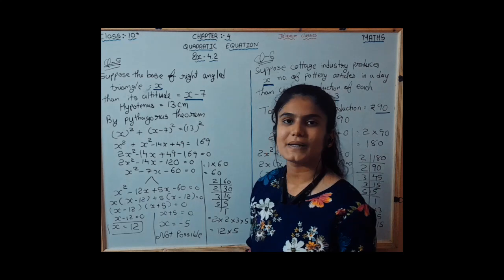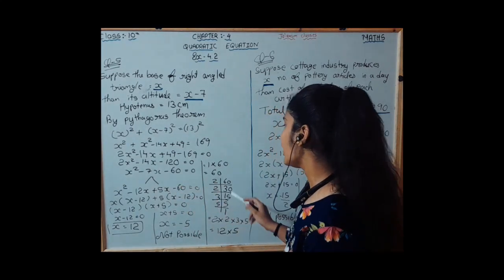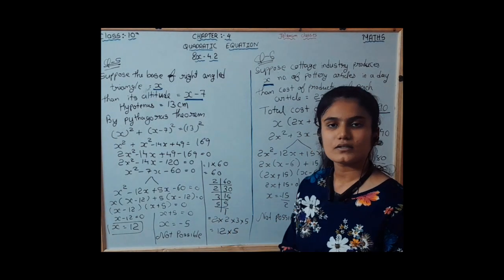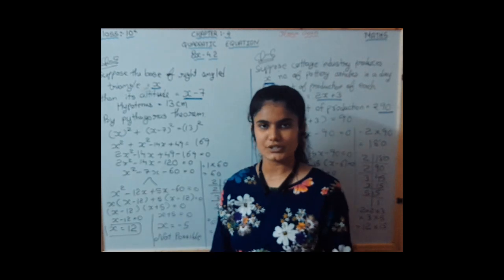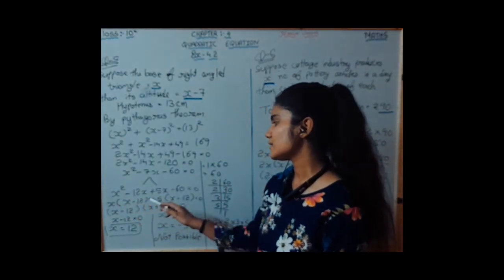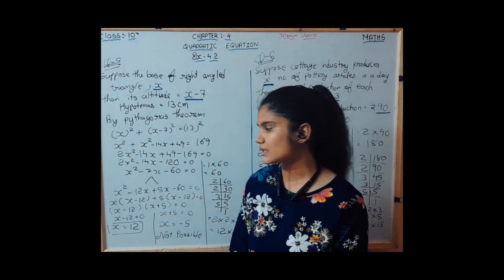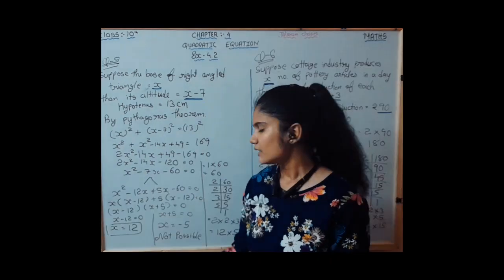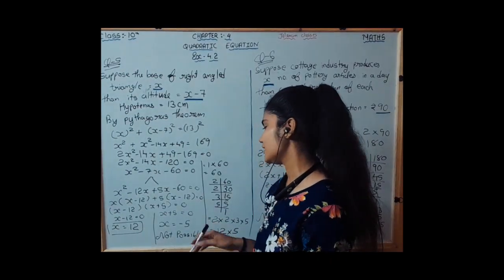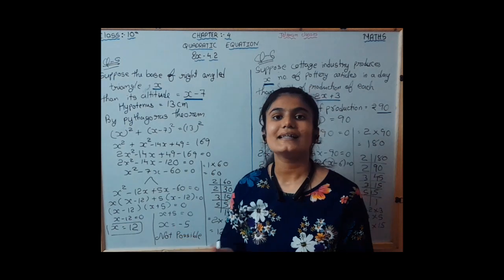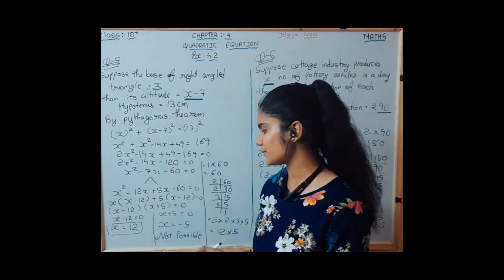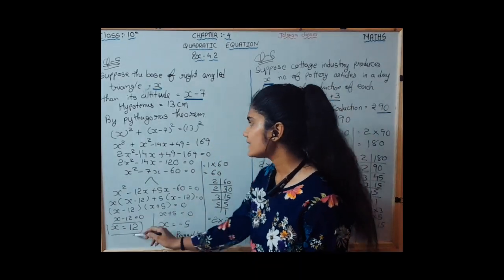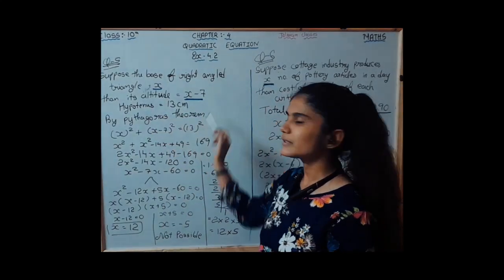Splitting the middle term, the factors of 60 are 12 and 5. The four-term equation is x squared minus 12x plus 5x minus 60 equals 0. By making pairs and taking common, we get the roots x equal to 12 and x equal to minus 5. Since the length of a triangle's side cannot be negative, minus 5 is rejected. Therefore the base is 12 cm and the altitude is 5 cm.